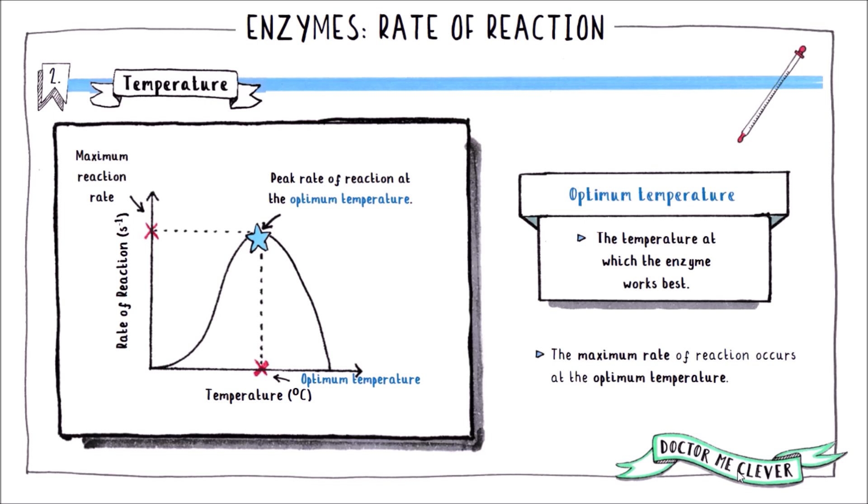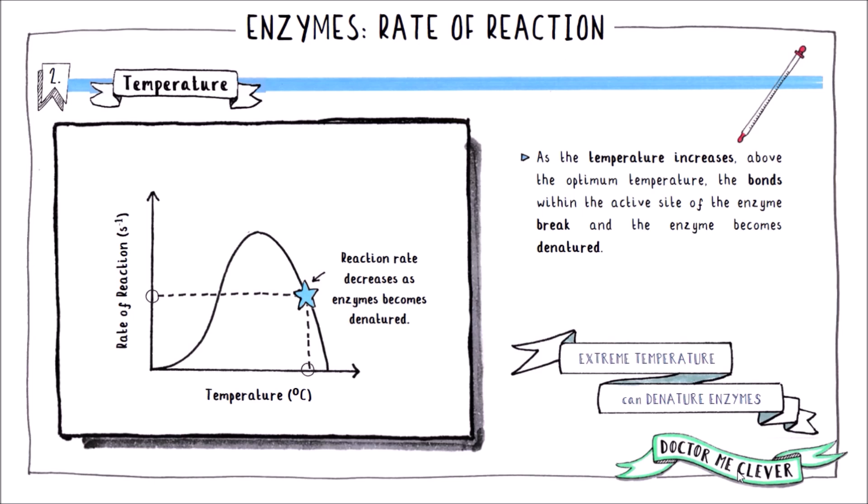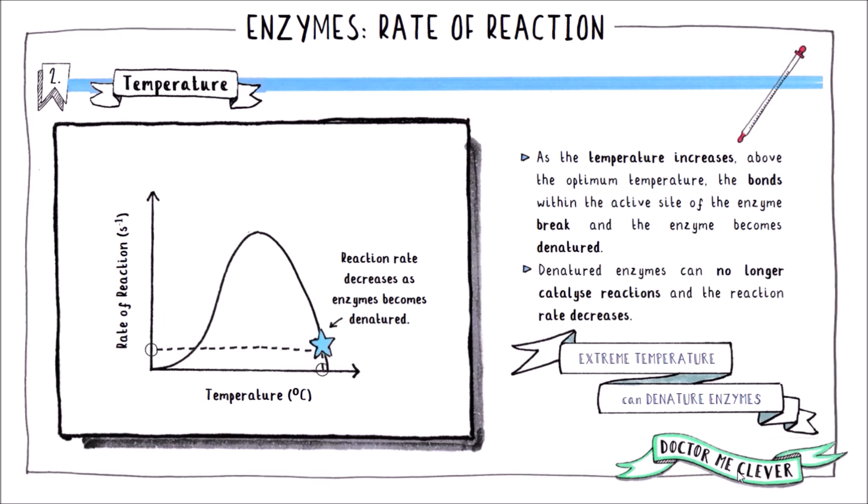Any deviation away from the optimum temperature would be damaging, so we control our internal body temperature to keep our enzymes working well. Not all enzymes have the same optimum temperature — enzymes found in thermal vent bacteria have much higher optimum temperatures. If temperature starts to exceed the optimum, excessive heat energy causes the bonds in the active site to break, leading to a change in shape. This means the substrate no longer fits as in the lock and key mechanism — the enzyme has become denatured — and the rate of reaction falls until it reaches zero.